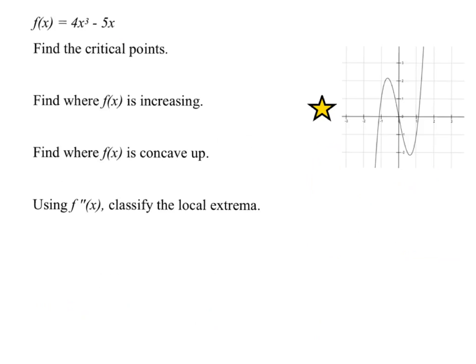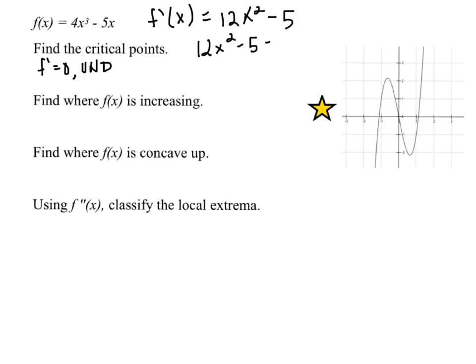Now, how would you do this if you had the function? I want to do this all with just the derivative. First, the critical points — that's where f prime equals zero or is undefined. In our case, f prime of x is 12x² minus 5. If I set that equal to zero, add 5 to both sides, divide by 12, and take the square root, I get x equals plus or minus the square root of 5/12.